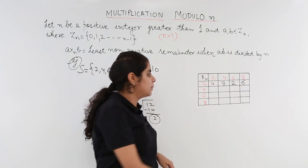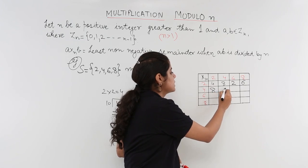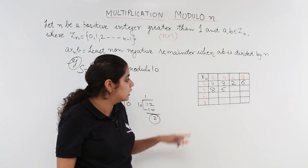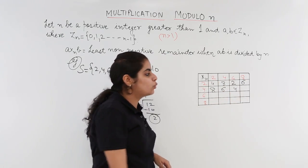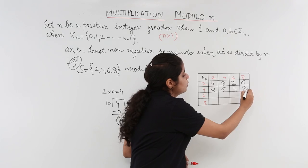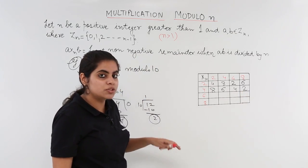4 x 2 is 8. Remainder will be 8. 4 x 4 is 16, 6 is the remainder. 4 x 6 are 24, 4 is the remainder. 4 x 8 is 32, 2 is the remainder. In case you are not following it is advisable to watch the previous video.